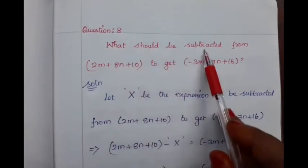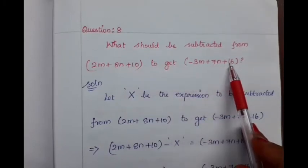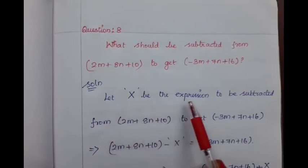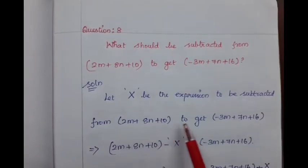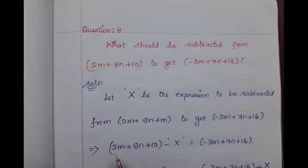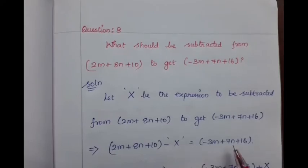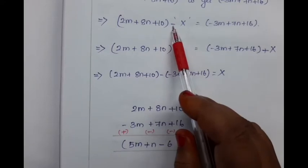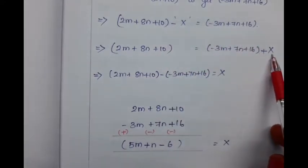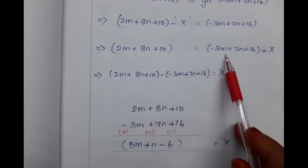Question number 8: What should be subtracted from 2m plus 8n plus 10 to get minus 3m plus 7n plus 16? Let us take that unknown expression as x. By the question, x is subtracted from 2m plus 8n plus 10, so it can be written as 2m plus 8n plus 10 minus x, which is equal to minus 3m plus 7n plus 16. For finding the value of x, we take minus x to the right hand side — it becomes addition. Then we take the expression from the right hand side to the left hand side — it becomes subtraction.